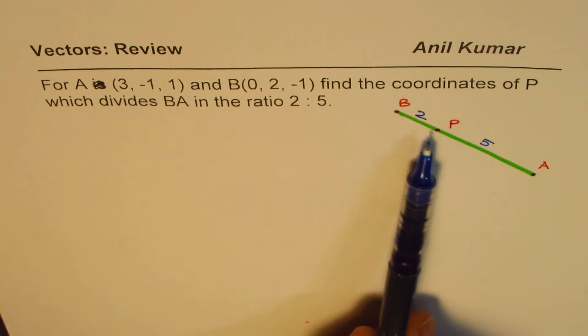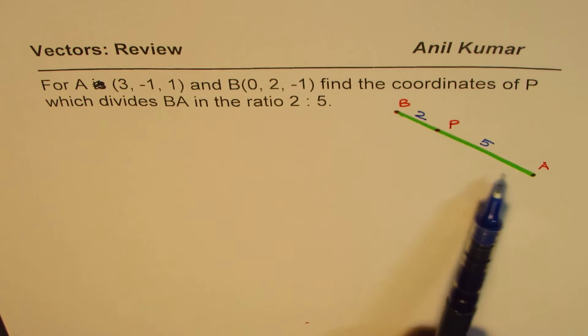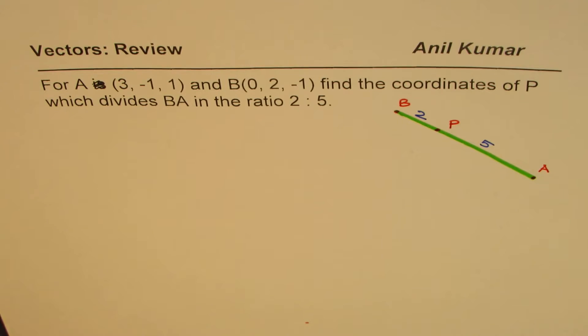That is how it is being divided. So the line segment BA is divided into 7 portions. BP is 2 out of those 7, and PA is 5 out of those. Now we need to find the location of point P, the coordinates of point P.